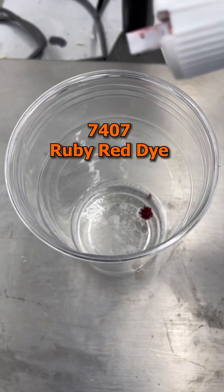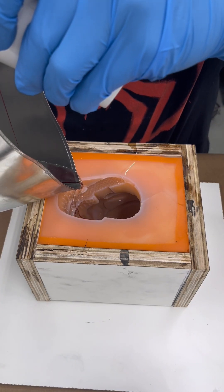For an interesting pattern, I made a smaller batch with ruby-red dye and poured it simultaneously with a larger clear batch.